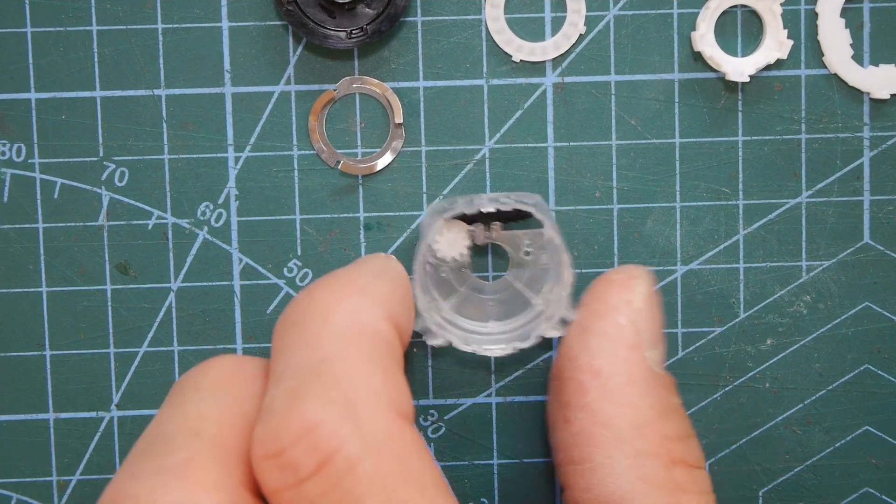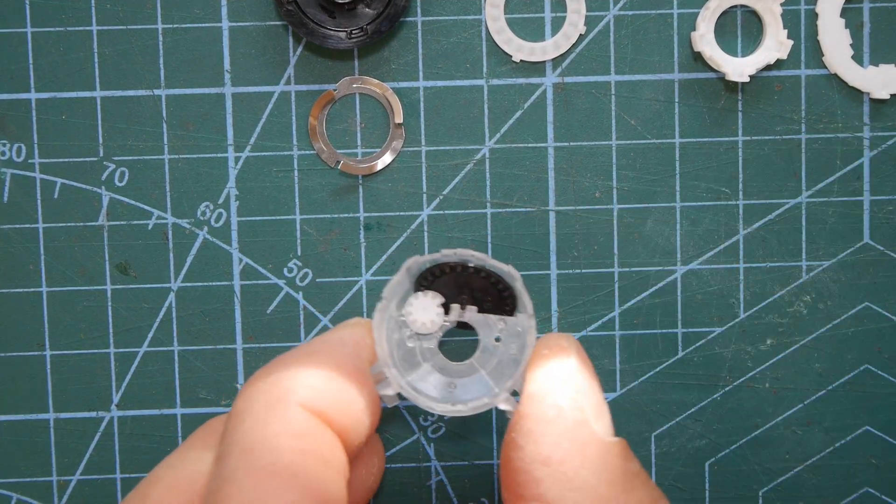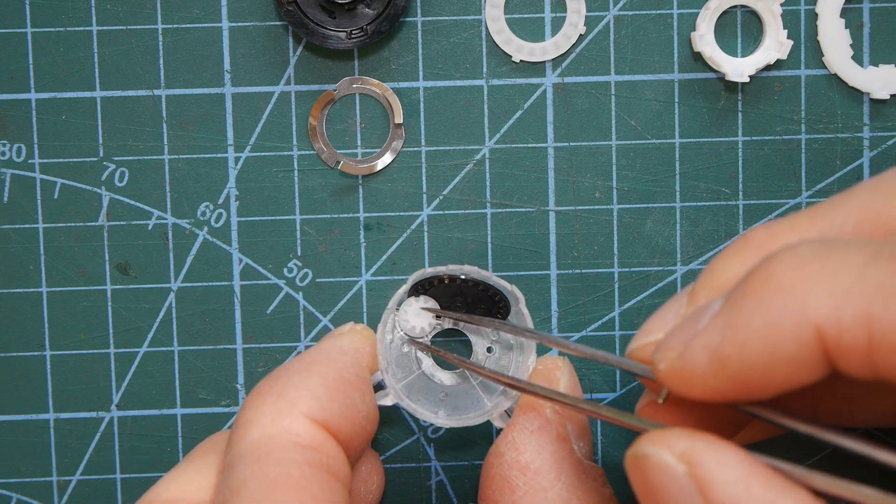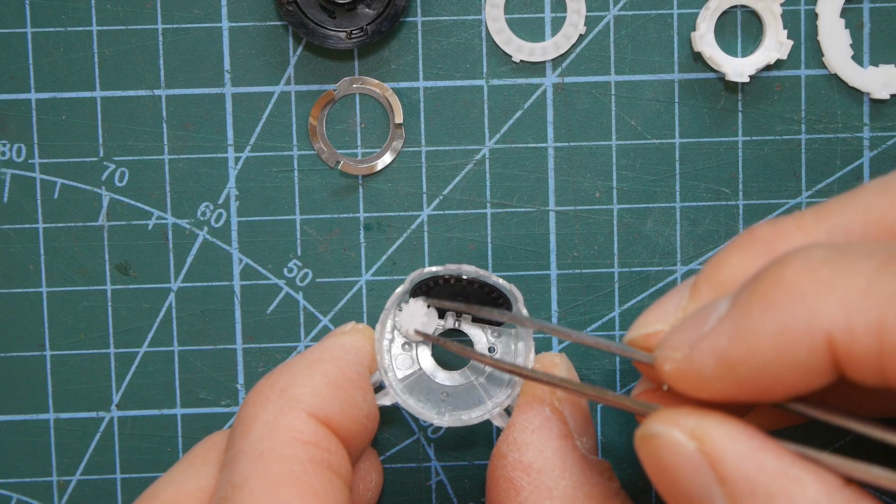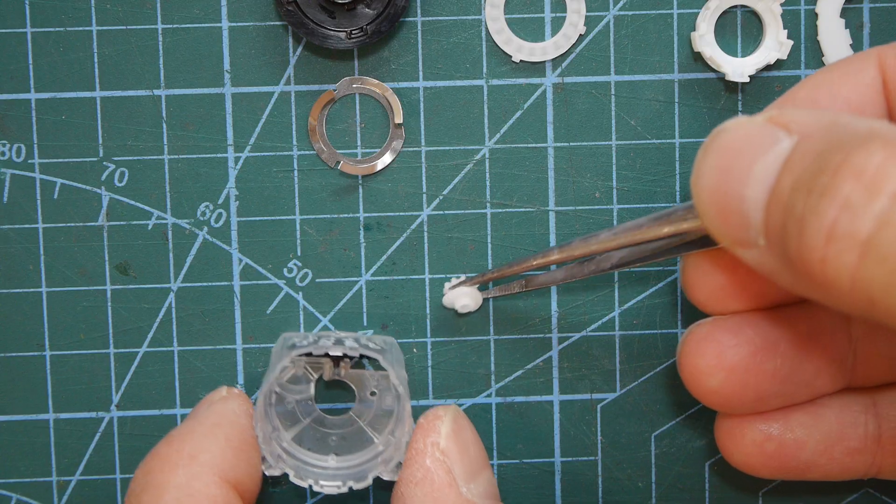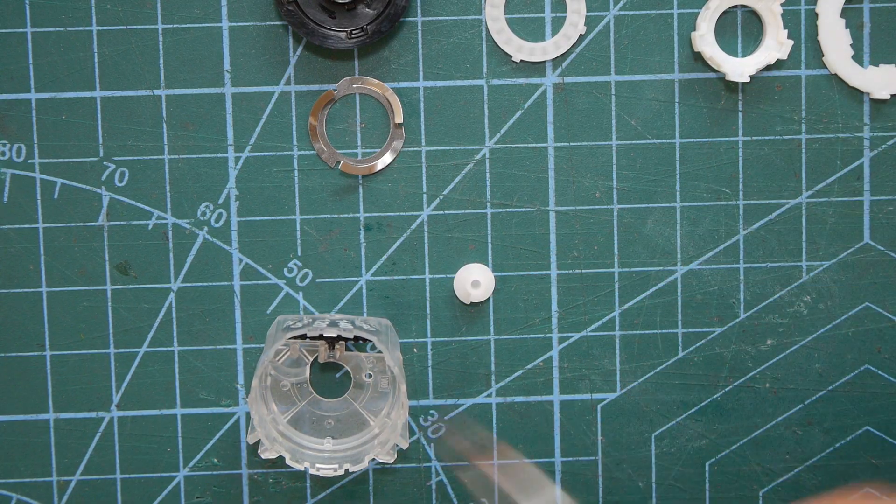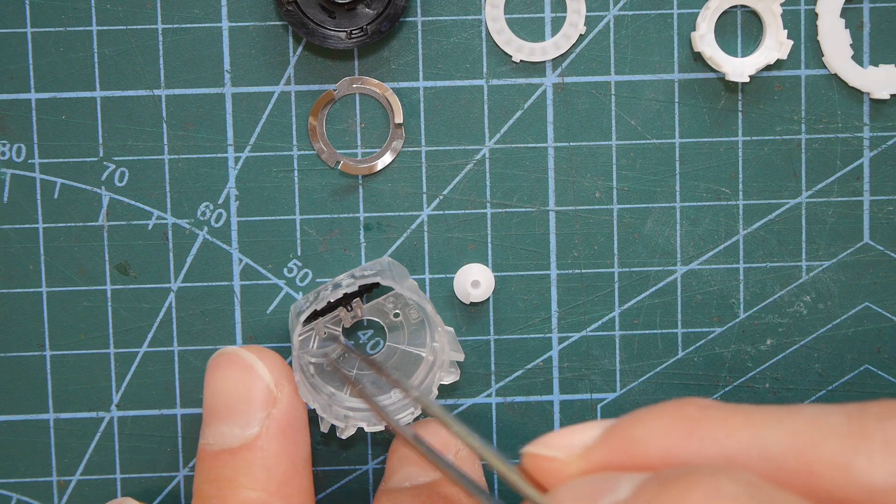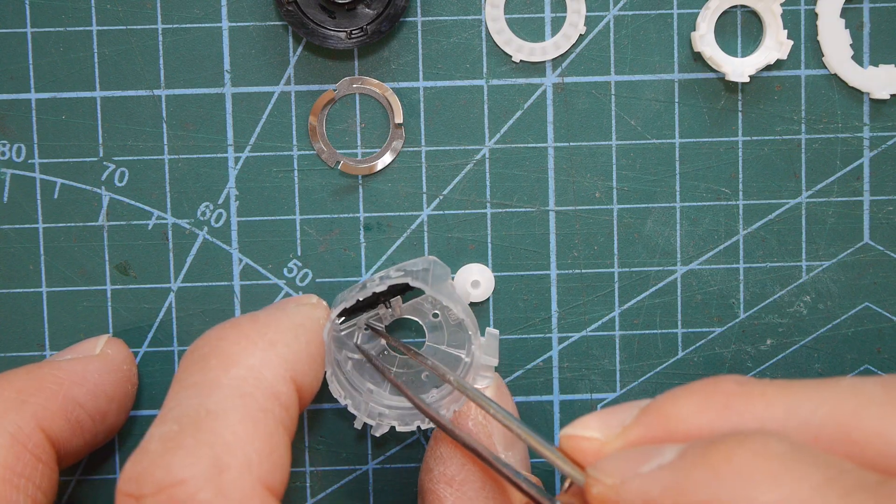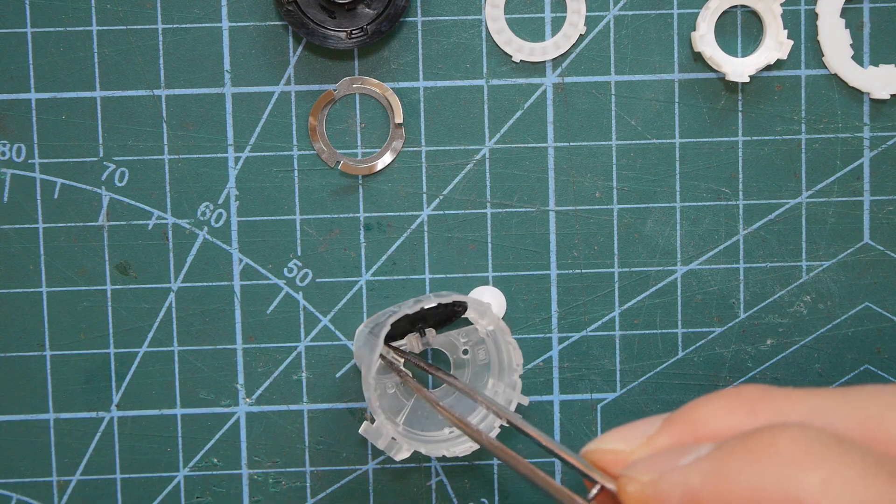So now let's take the gears out from inside here. Here's a little white gear that's directly connected to a worm drive and that worm drive drives the black counter wheel around and it sits on its own shaft there.